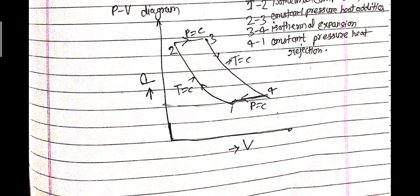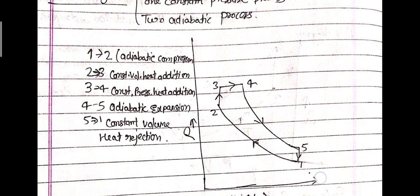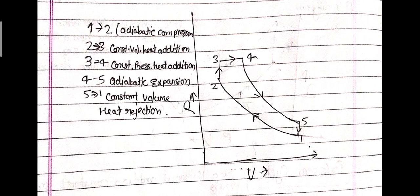The Dual cycle has two constant volume processes, one constant pressure process, and two adiabatic processes. Process 1 to 2: adiabatic compression. Process 2 to 3: constant volume heat addition. Process 3 to 4: constant pressure heat addition. Process 4 to 5: adiabatic expansion. Process 5 to 1: constant volume heat rejection.